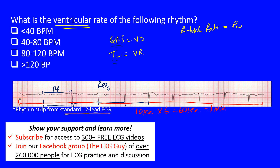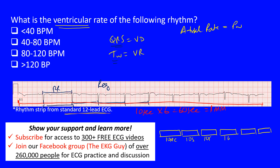Here's the reasoning: imagine one ECG rhythm strip is 10 seconds. If you placed six of them side by side, that equals 60 seconds — one minute. You can count one, two, three, four, five, six strips, each representing 10 seconds, totaling 60 seconds. That's where multiplying by six comes from.